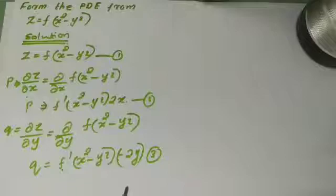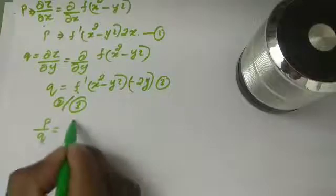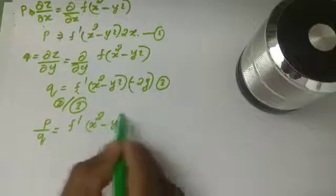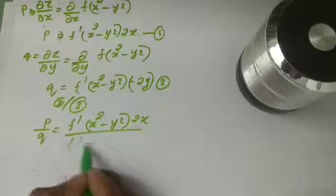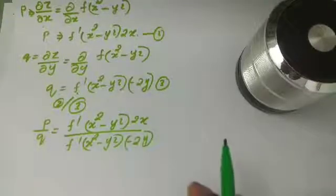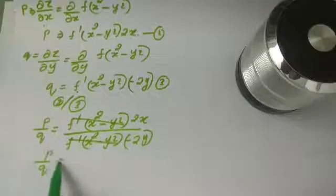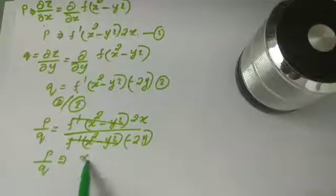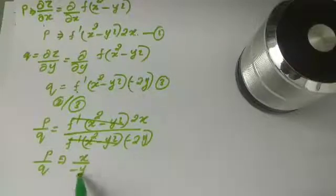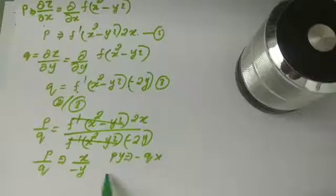Dividing Equation 2 by Equation 3: P by Q equal to f prime of x square minus y square into 2x divided by f prime of x square minus y square into minus 2y. The f prime terms cancel out, giving P by Q equal to 2x divided by minus 2y, which simplifies to P by Q equal to x over minus y.